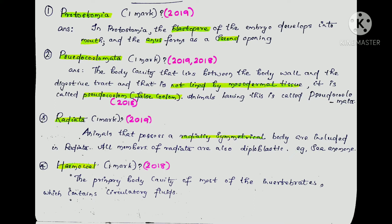So, if you look at it in one or two sentences: Protostomy means that when the embryo develops, the blastopore forms the mouth first, and the anus forms as the second opening. That is, the mouth is first developed and the second opening is the anus.